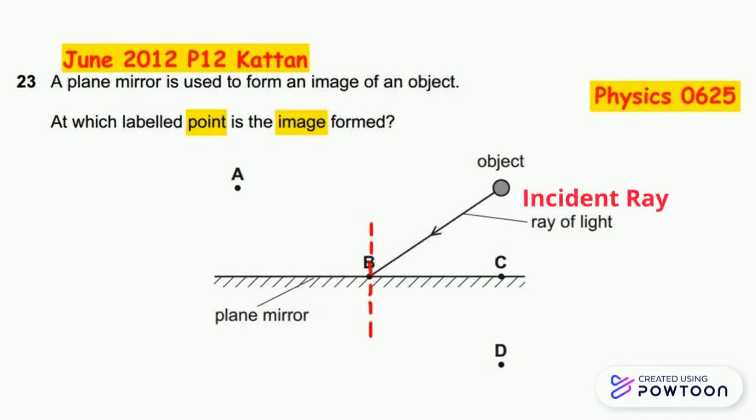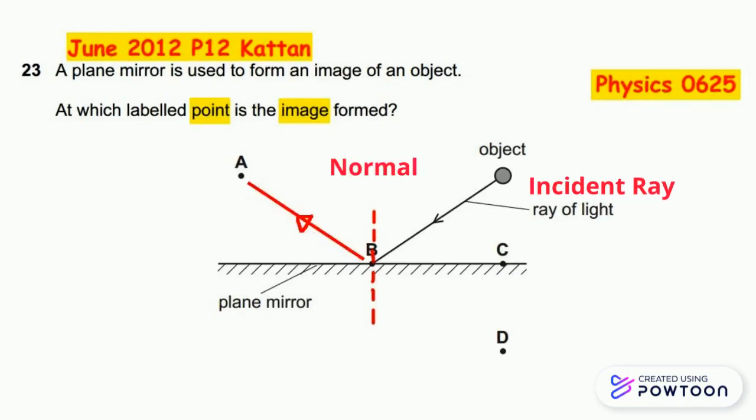To answer the question, we have to draw a perpendicular dotted line at the incident point B, which is the normal. Then we draw a solid line from point B to A as the reflected ray.